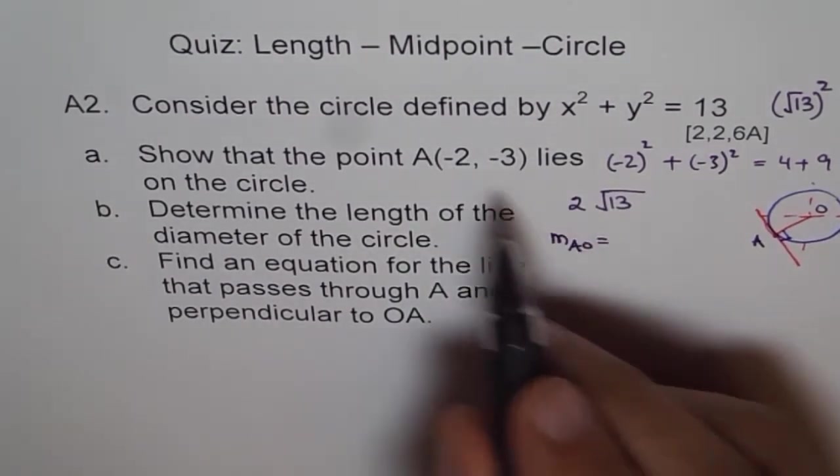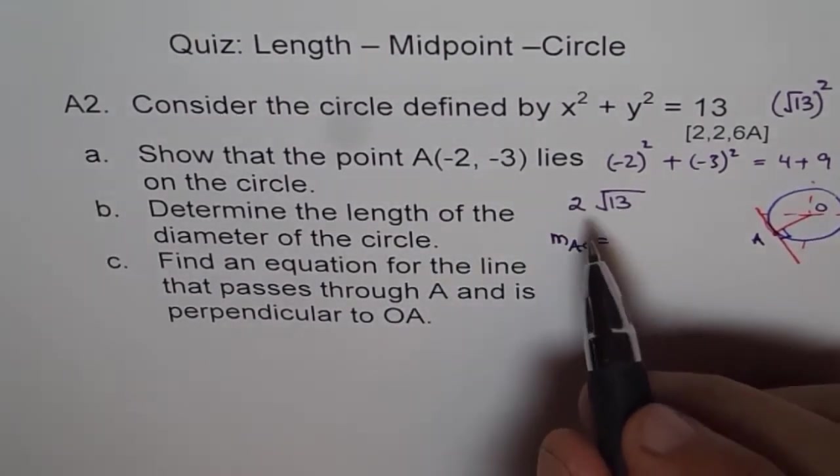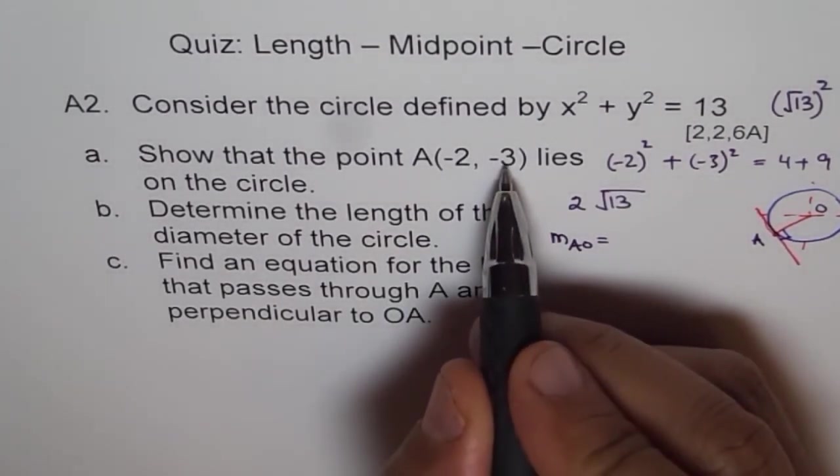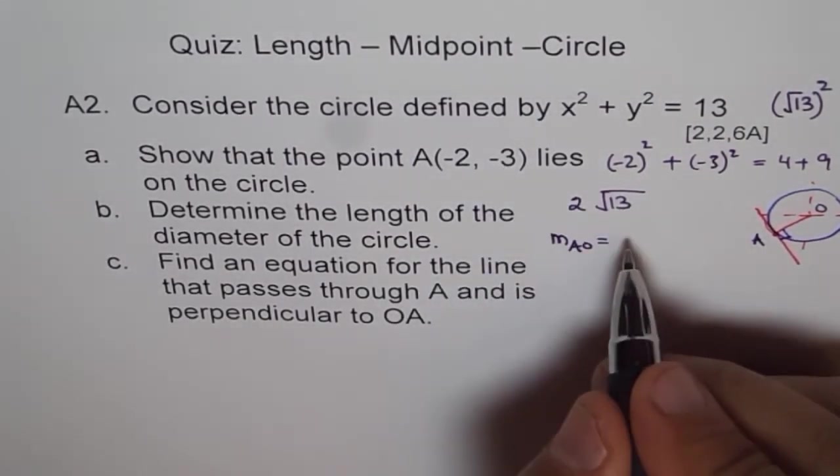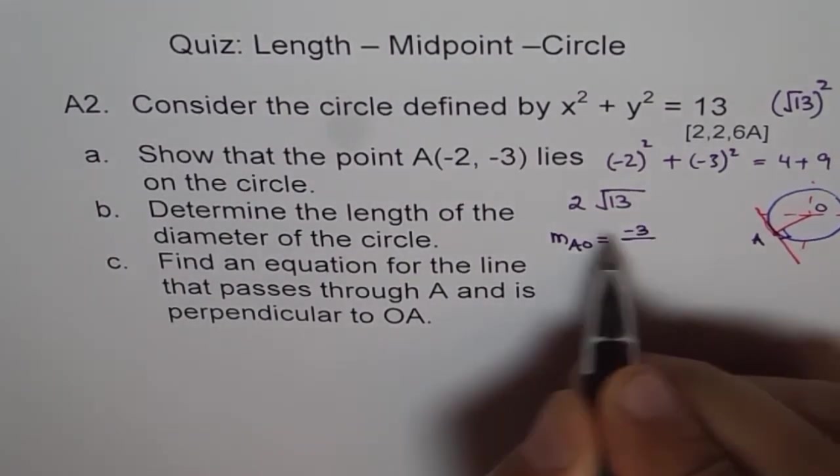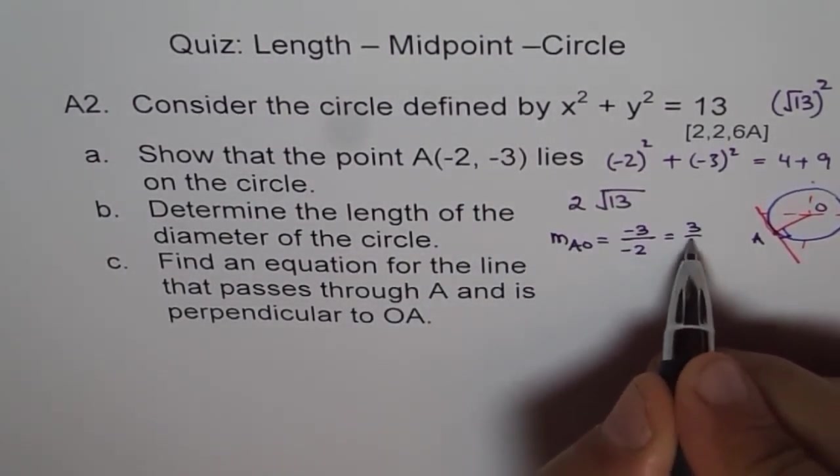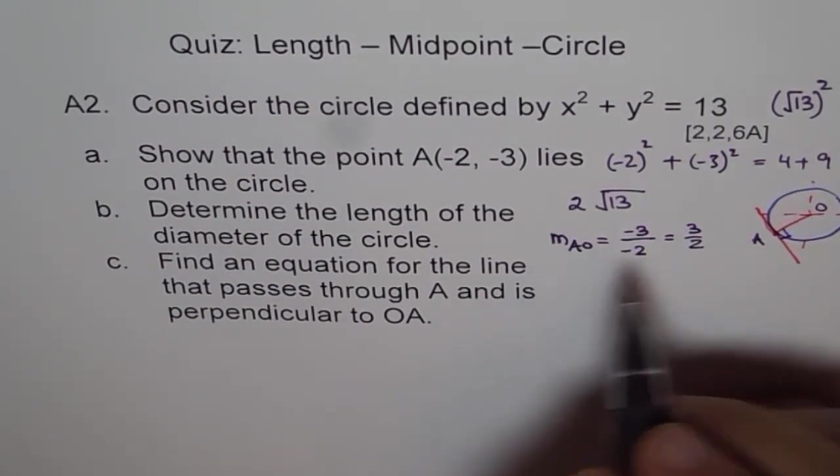So this minus 0, which is minus 2. So y2 minus y1, right? So this is your y2, which is minus 3, over minus 2, which is 3 over 2. Correct? That is the slope of your line OA.